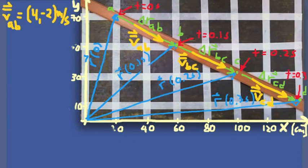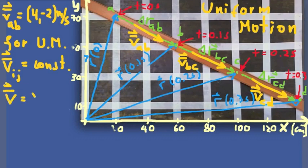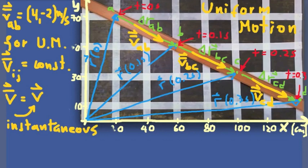The average velocity between all different points A, B, C, and D is the same: (4, −2) meters per second. This is the definition of uniform motion — if the object moves with constant velocity, the average velocity between any two points will be the same constant. For uniform motion, the average velocity between any two points equals the instantaneous velocity of the object.